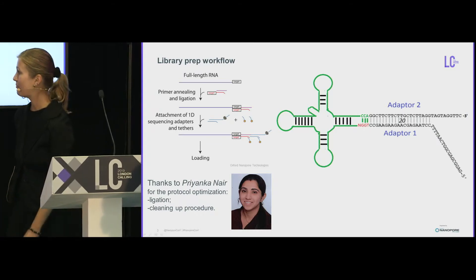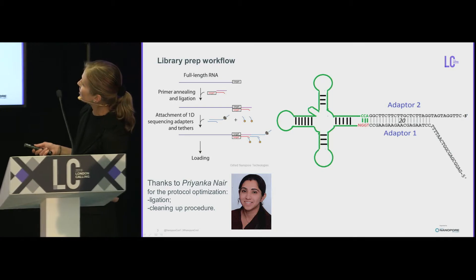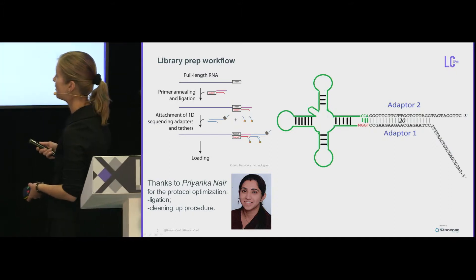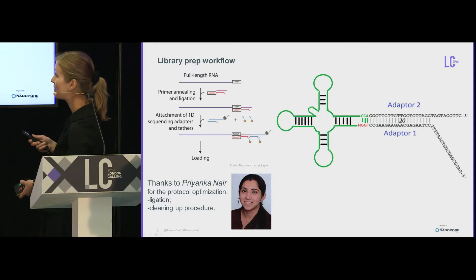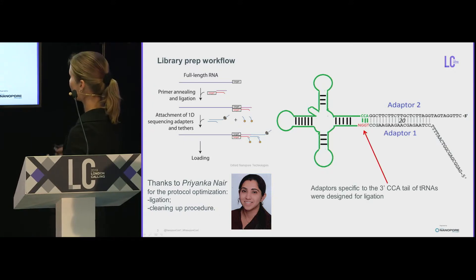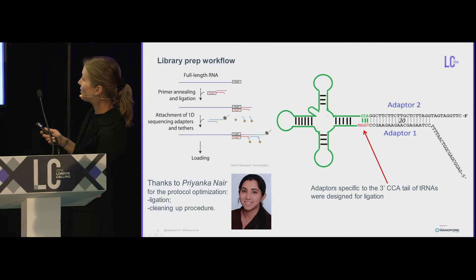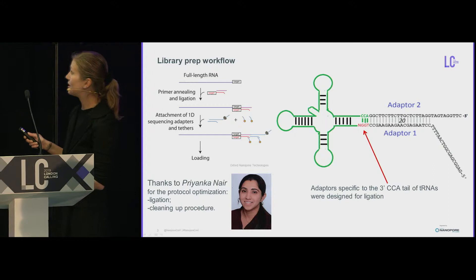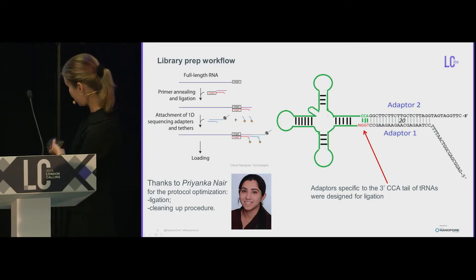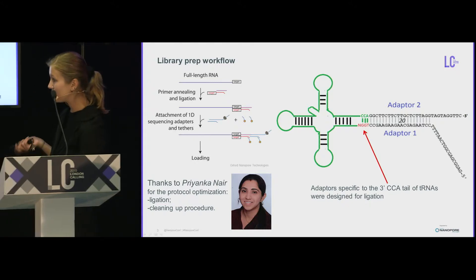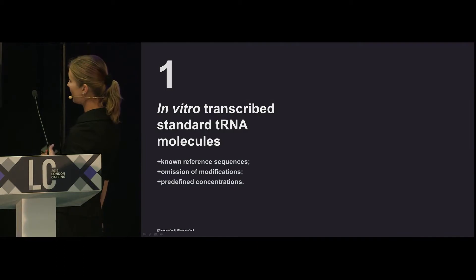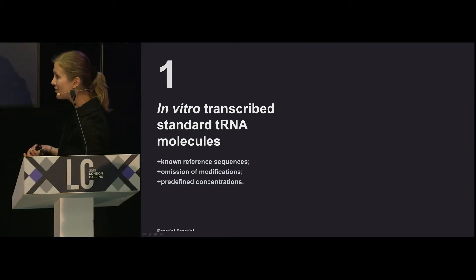I'd like to thank my co-worker Priyanka — together we tried to improve the library preparation, because you cannot use the same library prep as for normal RNA sequencing with nanopore. This is the standard workflow for direct RNA sequencing without reverse transcription. We designed our own adapter containing the complementary sequence to the CCA tail of the tRNAs, whereas for RNA-seq it would usually start with a poly-A tail and poly-T complementary adapter. Priyanka also optimized the ligation and cleanup procedures, which turned out to be quite complex for these small molecules.